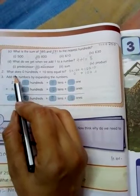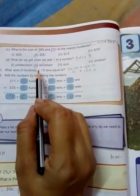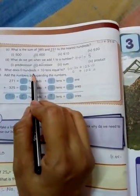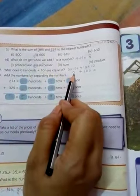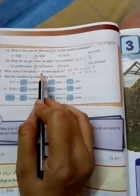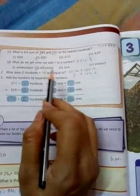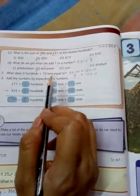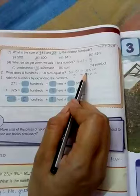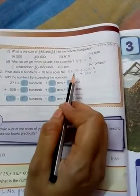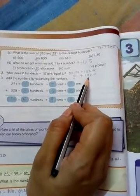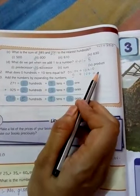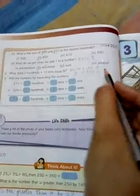Second question: What does 0 hundreds plus 10 tens equal to? 0 hundreds means we have no 100, that means we have 0. Plus 10 tens. 10 tens means 1 ten is 10, 2 tens is 20, 3 tens is 30. So 10 tens are 100. What is 0 plus 100? I told you one fact: whenever 0 is added to any number, we get the same number. So the answer is 100.